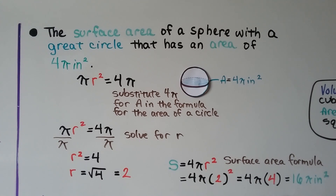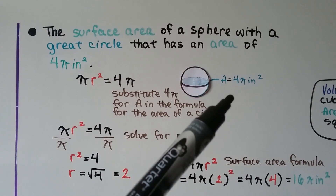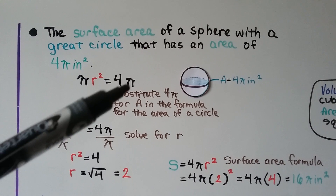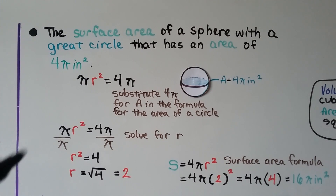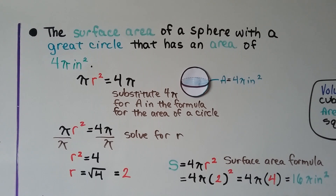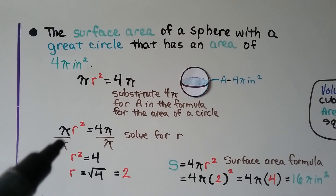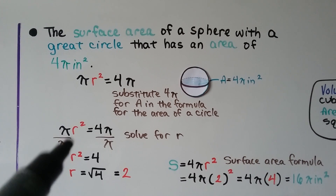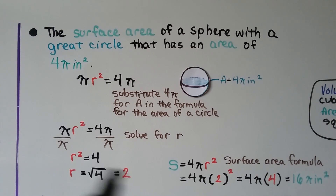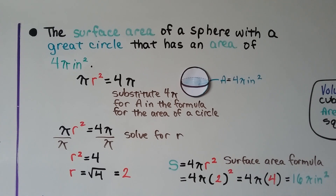We can find the surface area of a sphere whose great circle has an area of 4 pi inches squared. Substituting into the circle area formula, pi r squared equals 4 pi. Dividing both sides by pi gives r squared equals 4, so the radius equals 2. Putting that into the surface area formula: 4 pi times 4 equals 16 pi inches squared.